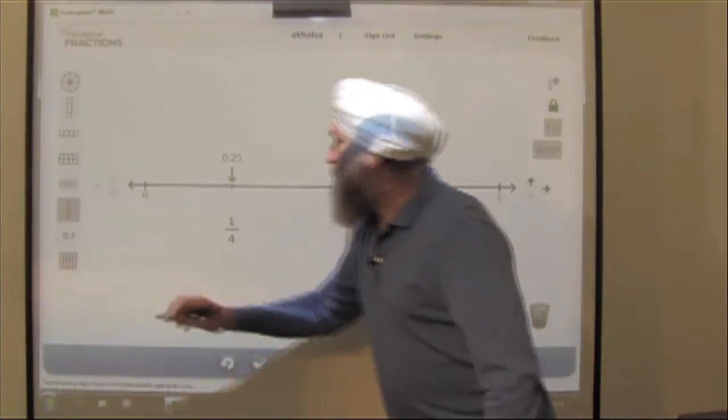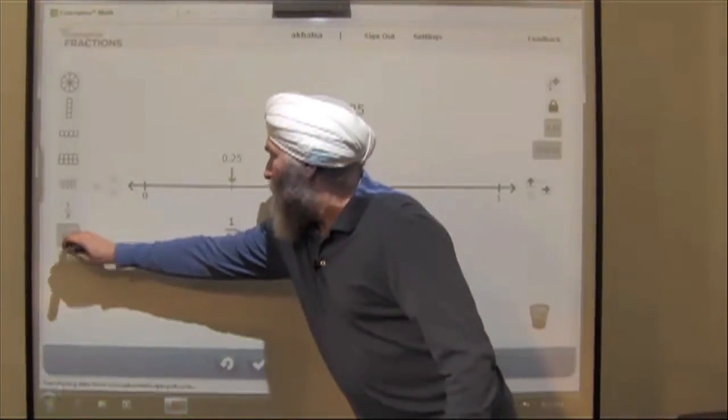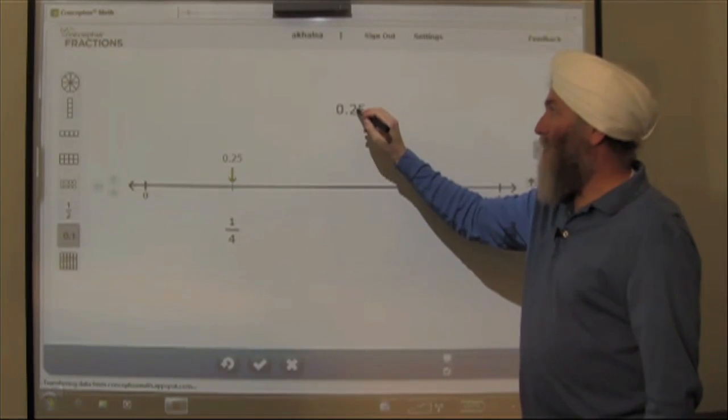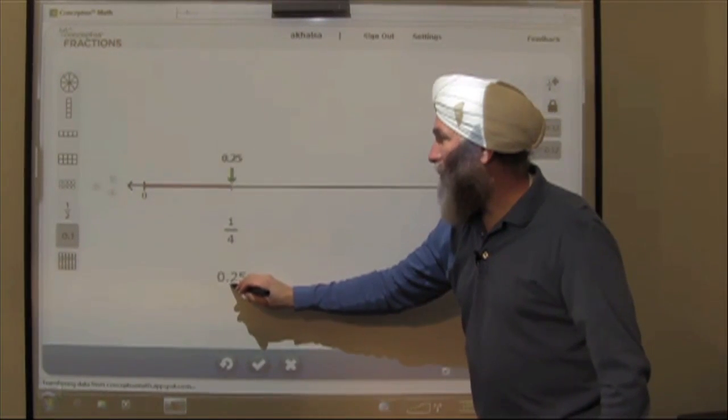In fact, we can represent this quarter, this 1/4, as 0.25. And of course, it's going to belong in that same place.